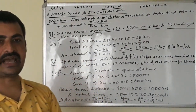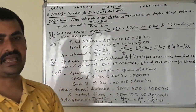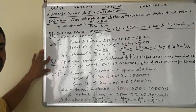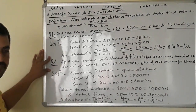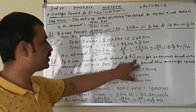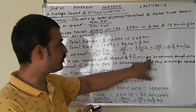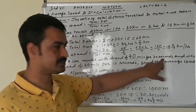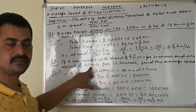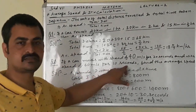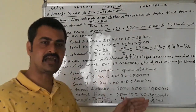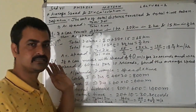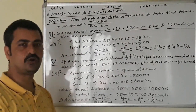When total distance and total time are known, the average speed is calculated. In the second question, I have tried to explain using speed and time. If a car moves with a speed of 40 meter per second for 20 seconds, and then with a speed of 60 meter per second for 10 seconds, find the average speed.